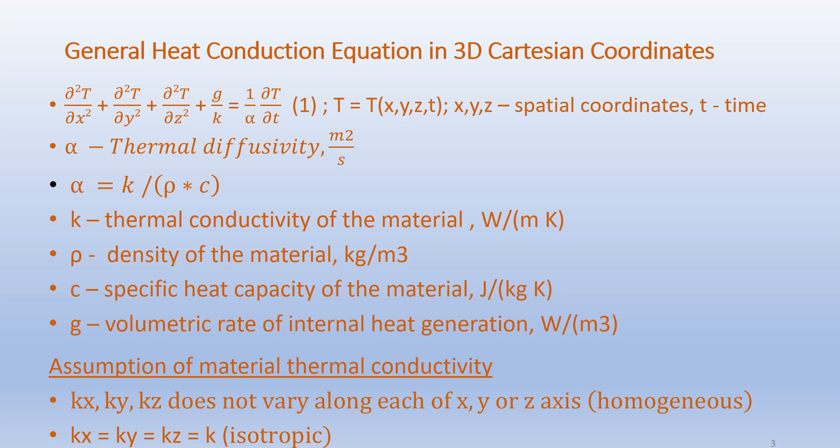Our assumptions regarding material thermal conductivity are given below. The thermal conductivity along the x direction does not vary, and hence we call this the homogeneous condition. Likewise, the thermal conductivity along the y and z directions do not vary along each of those directions. Also, kx equals ky equals kz equals k, which means the thermal conductivity satisfies the isotropic condition.